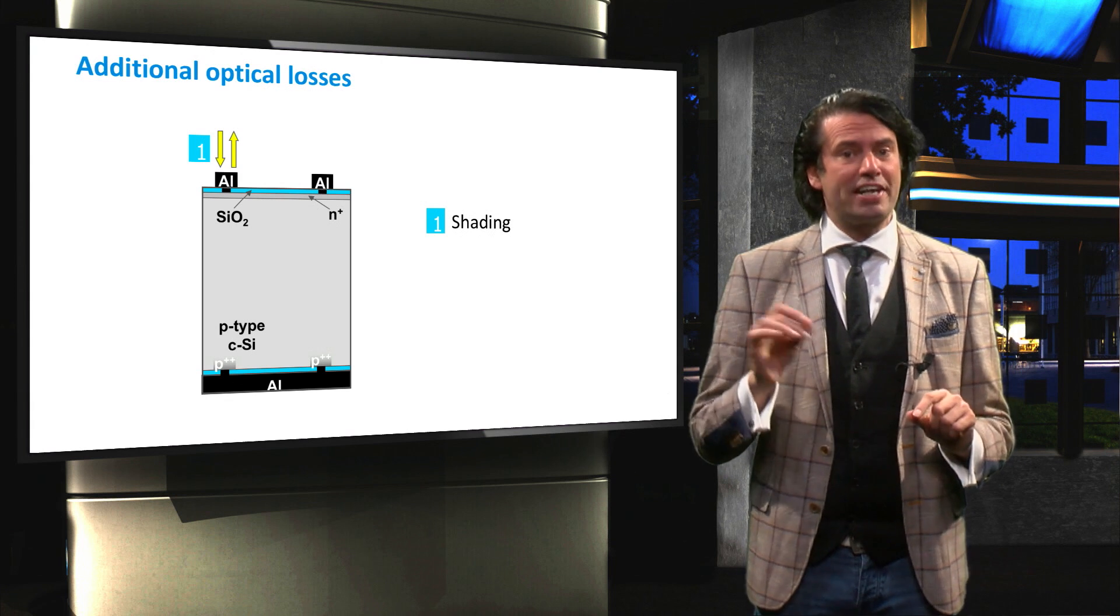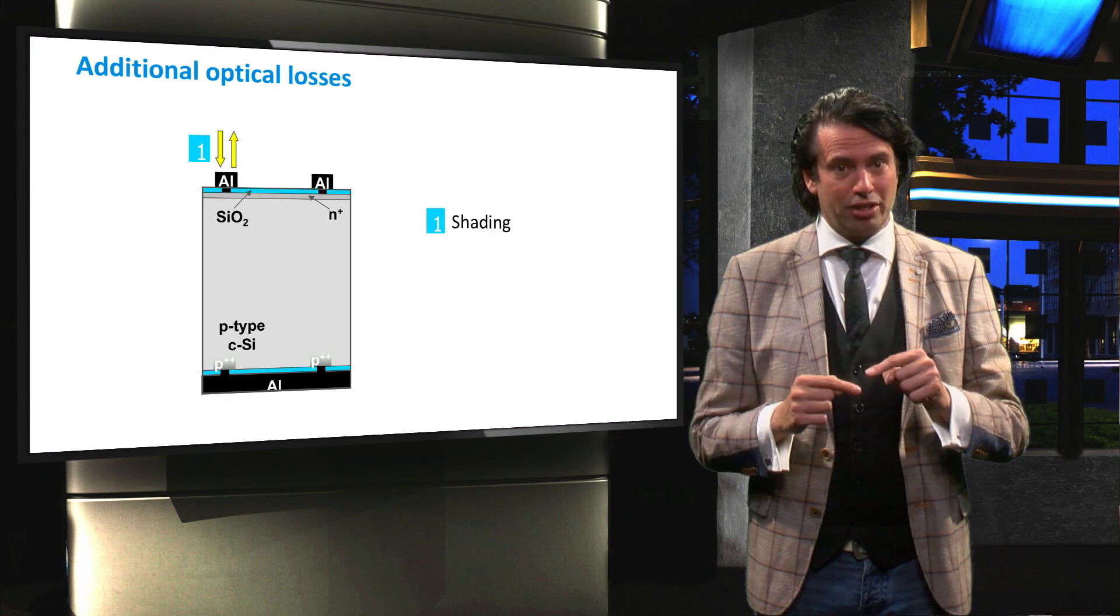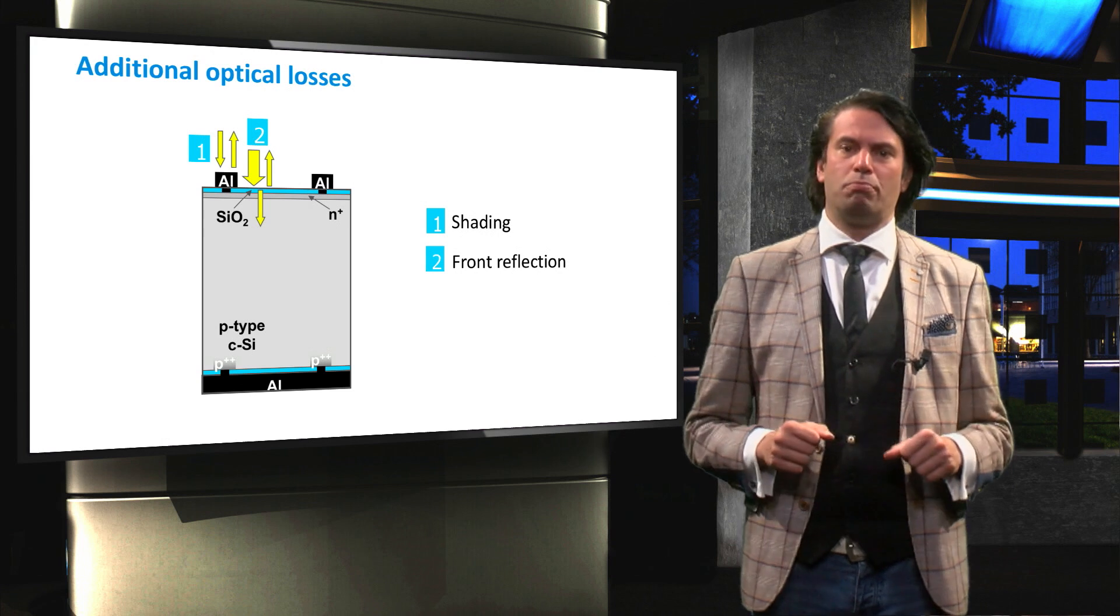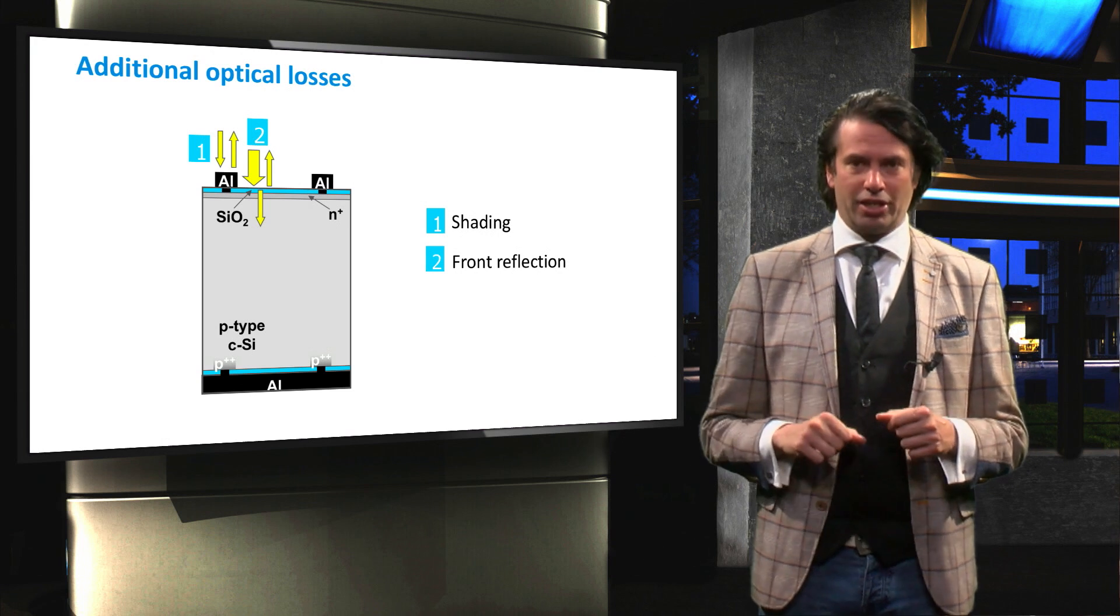Shading by the front metal grid therefore decreases the amount of sunlight reaching the absorber layer. The metal grid is not the only factor that prevents light from entering the solar cell. The glass plate used to encapsulate the solar cell modules reflects a fraction of the incident light.